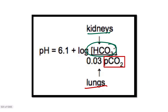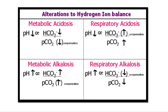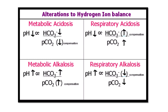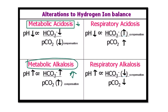To answer any ABG question, remember these four important equations. In metabolic acidosis, pH is less than 7.35 and all parameters reduce. In metabolic alkalosis, all parameters increase. In the metabolic case, there is no problem — acidosis means all parameters reduce, alkalosis means all parameters increase.